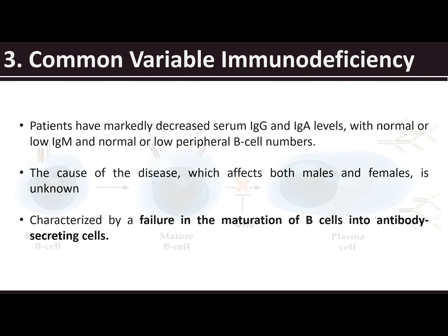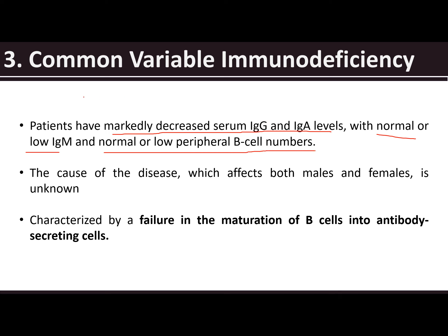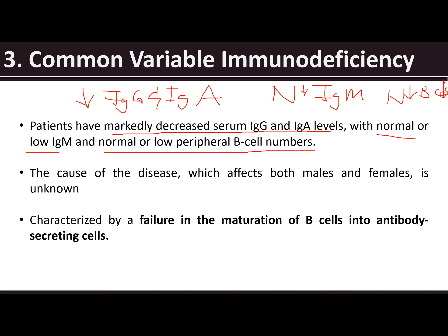Then we also have common variable immunodeficiency. In common variable immunodeficiency, there is a markedly decreased serum IgG and IgA levels, with normal or low IgM and normal or low peripheral B cell numbers.